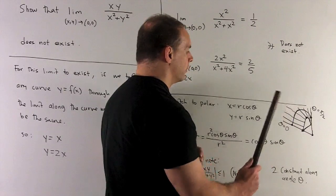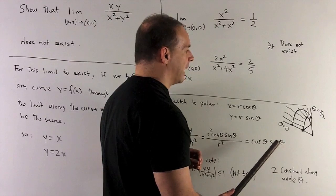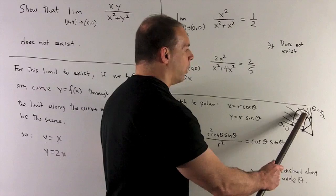If I take π/4, that's going to give me √2/2 times √2/2, which gives me 1/2. So as this comes in along π/4, that wants to be 1/2.